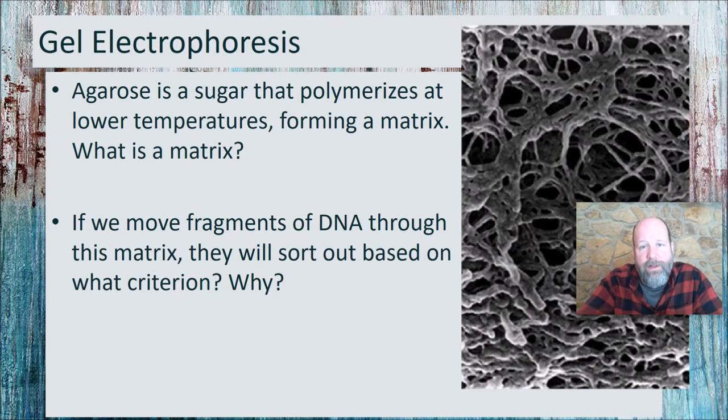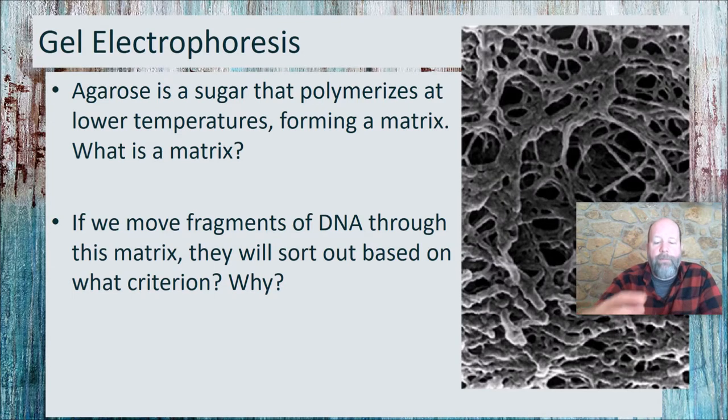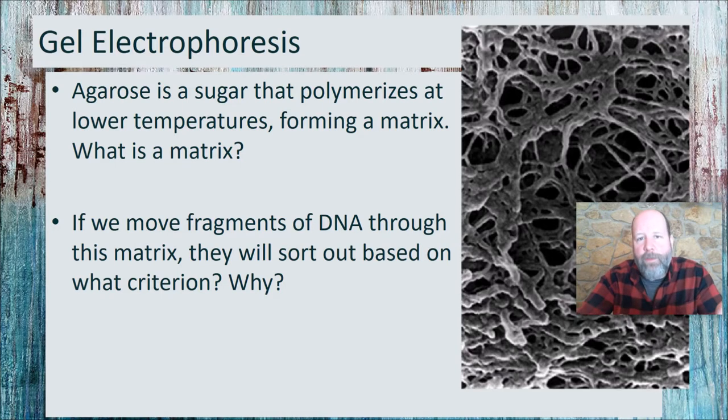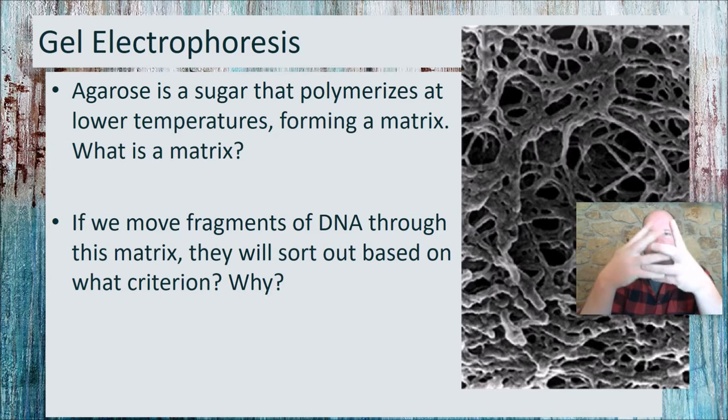The gel in gel electrophoresis is made using a sugar called agarose. It works a lot the way collagen does or gelatin, what we use to make jello. You can take a powder, mix it with some water, heat it up, and it will dissolve. As it cools, it will polymerize. It makes a matrix. What a matrix is, it's just a network. These fibers polymerize every which way as it cools, and it traps water in between those strands.